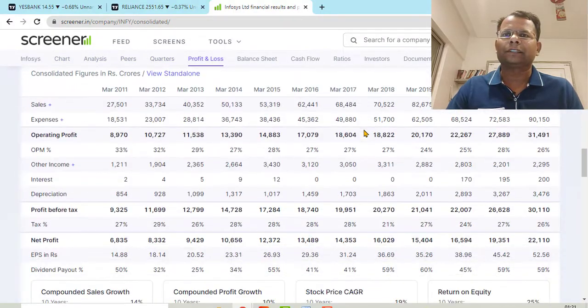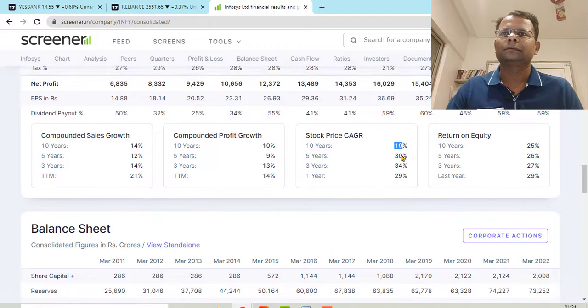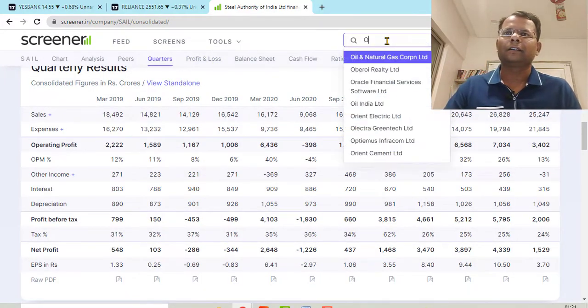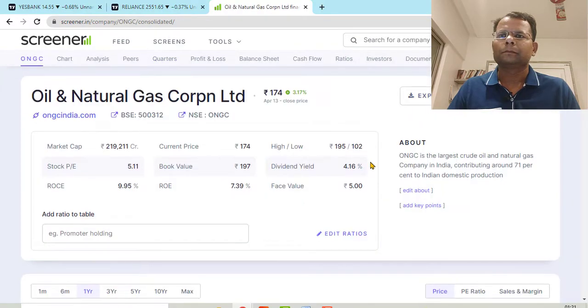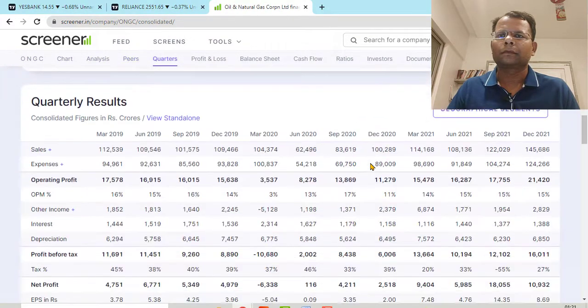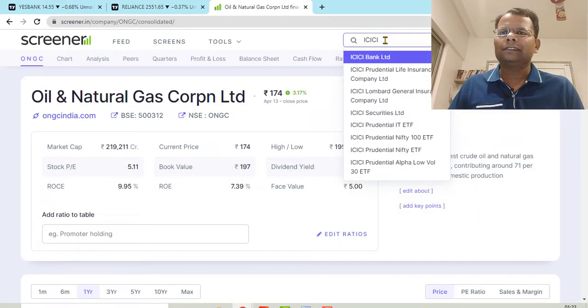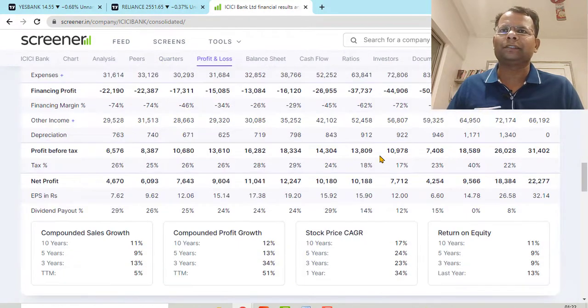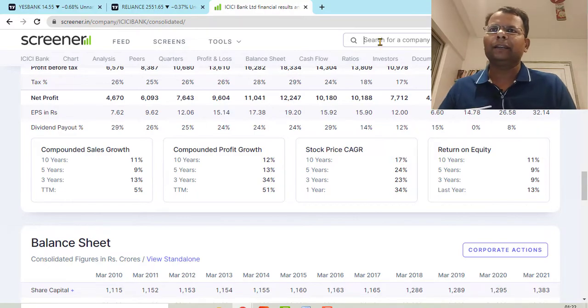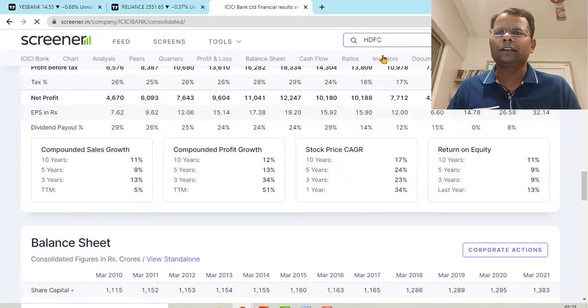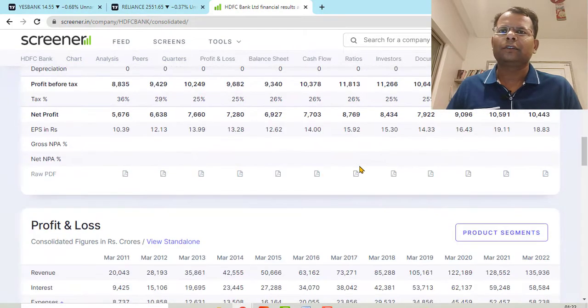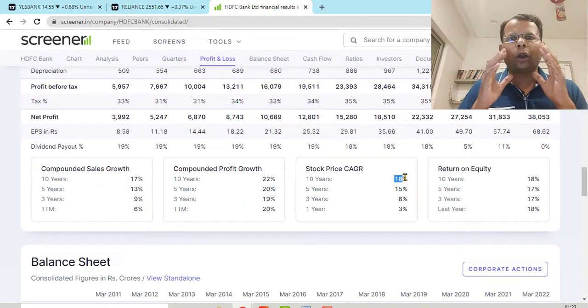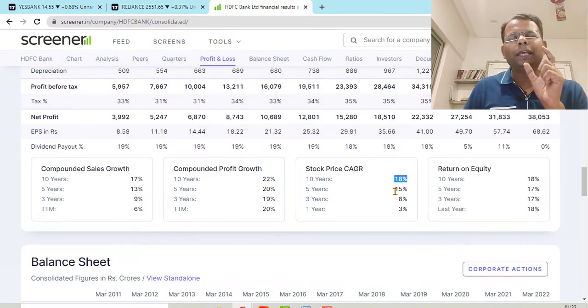Infosys is 19 percent. ICICI Bank, the CAGR is around 17 percent. HDFC Bank, the CAGR is around 18 percent.